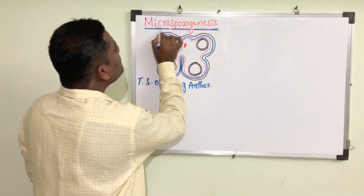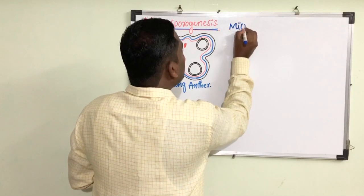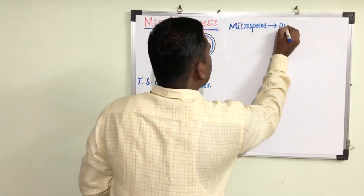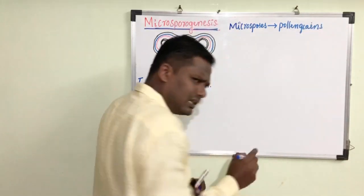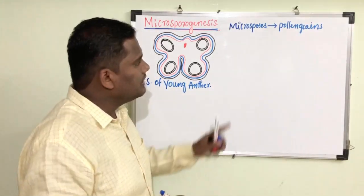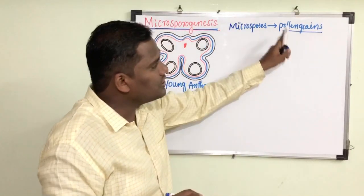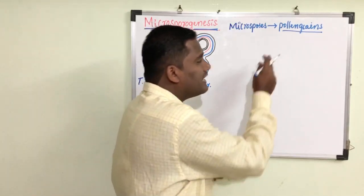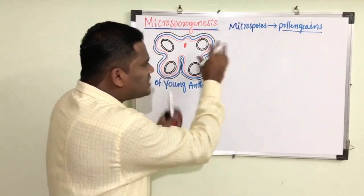Now what is this microspore? Microspores means pollen grains, and we know these pollen grains are the male gametophytes. The pollen grains are called microspores because they are very minute, very small, and microscopic in nature.